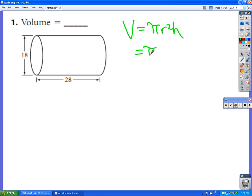And so in this case, the radius is from the center of course to the edge. So since the diameter is 18, that means the radius is 9. The height is the distance in between the two bases, or 28. So it's going to be pi times 9 squared times 28.